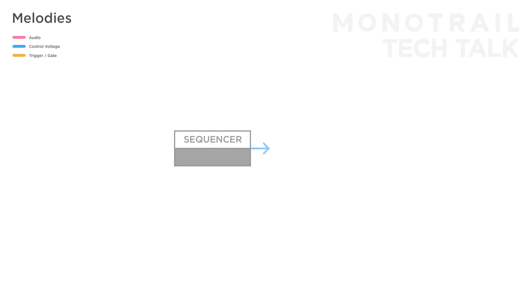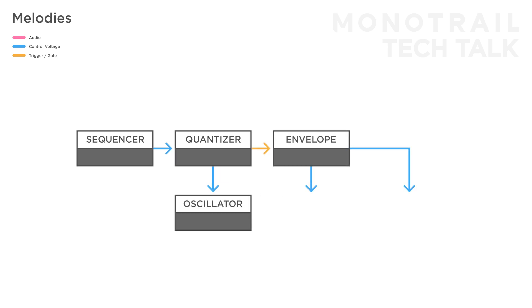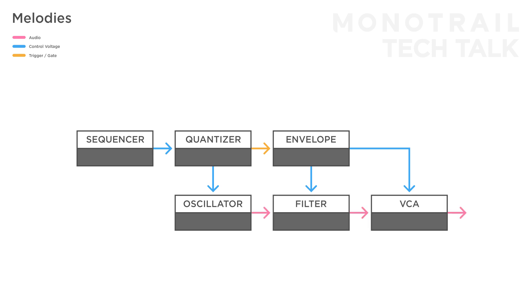Let's start with the basics and use a quantizer to create some melodies. If you have a modular sequencer that outputs linear control voltages, you can send its sequence to a quantizer to turn it into a quantized sequence. Send that to an oscillator and use the quantizer's trigger output to trigger an envelope to shape the filter and VCA in a simple voice. In a modular system you can feed all kinds of voltages into a quantizer to create melodies — you can use noise or a random voltage to create completely unpredictable melodies. In this case, you need a modular clock to trigger the quantizer in order to create tempo-synced melodic changes.